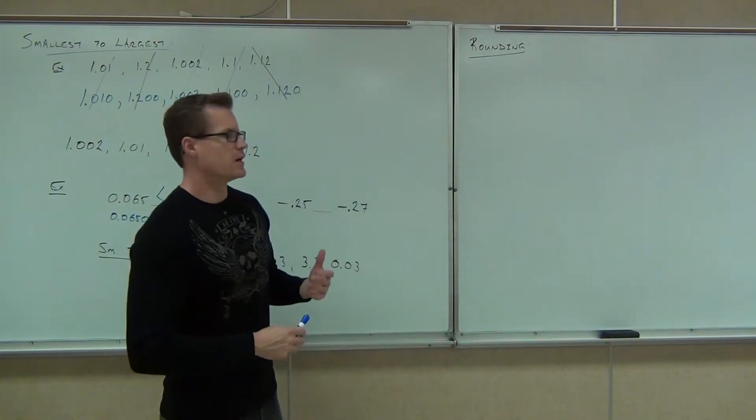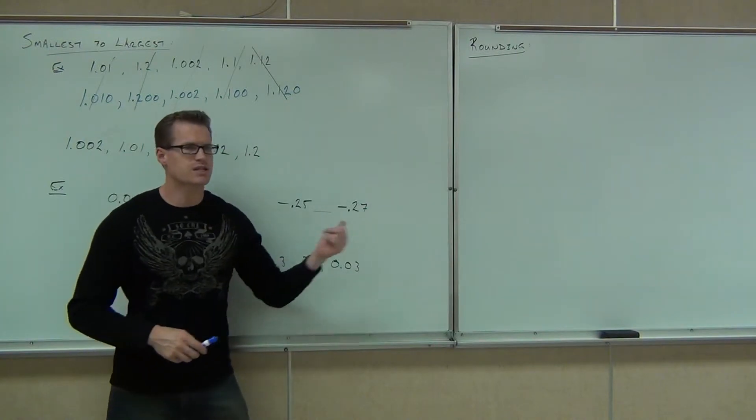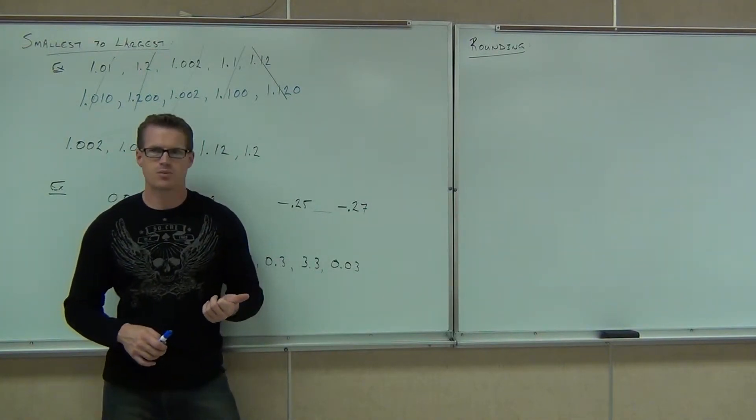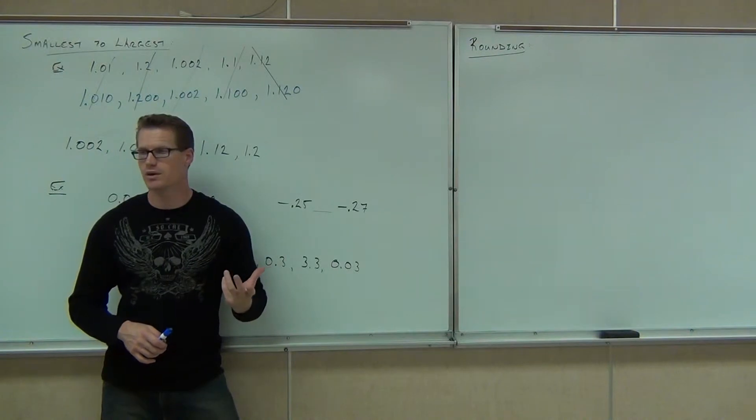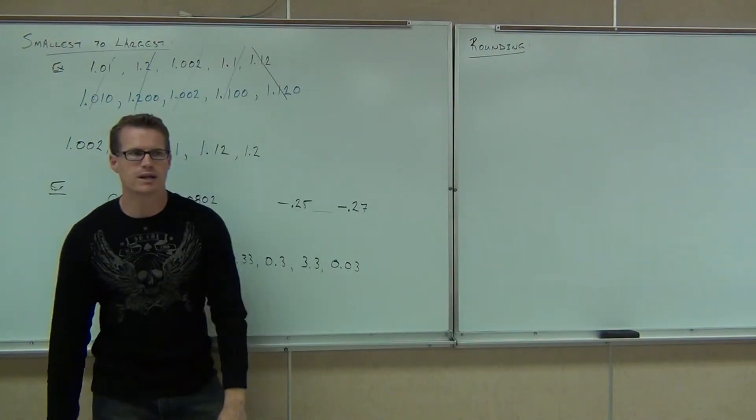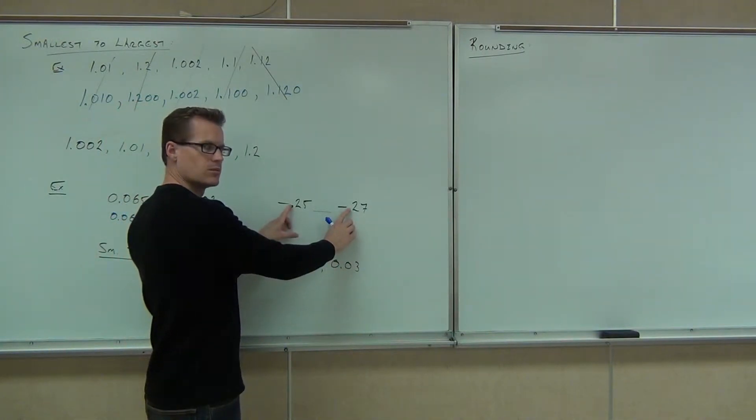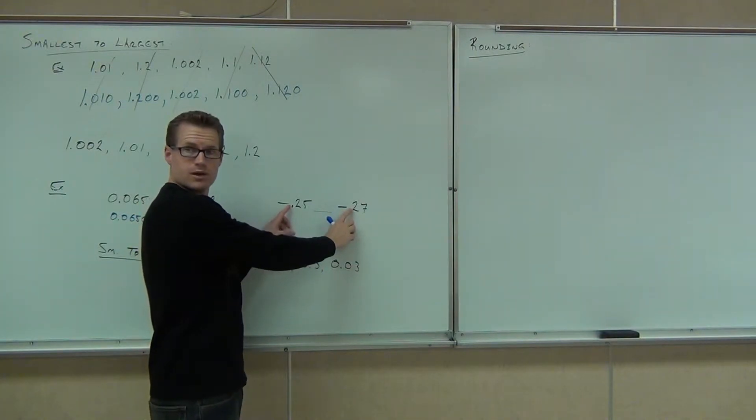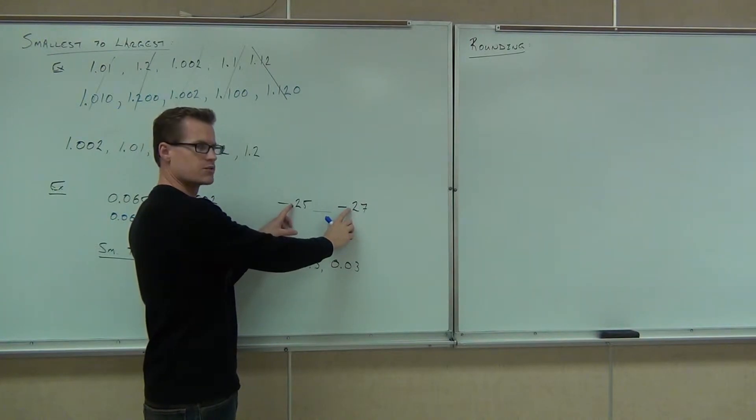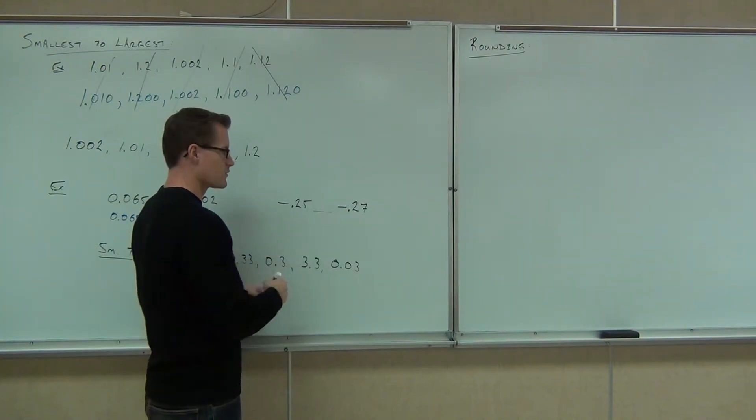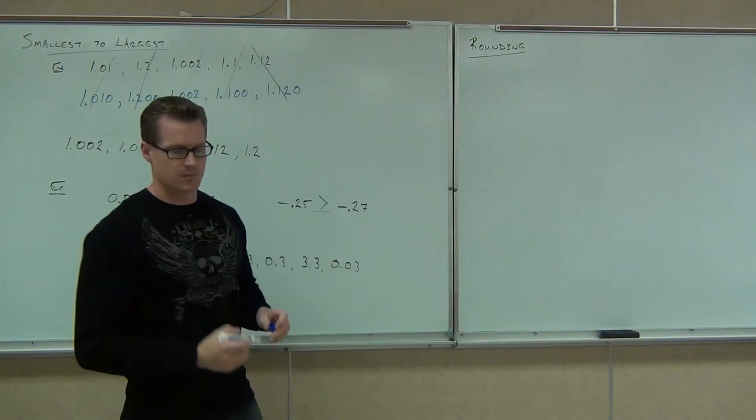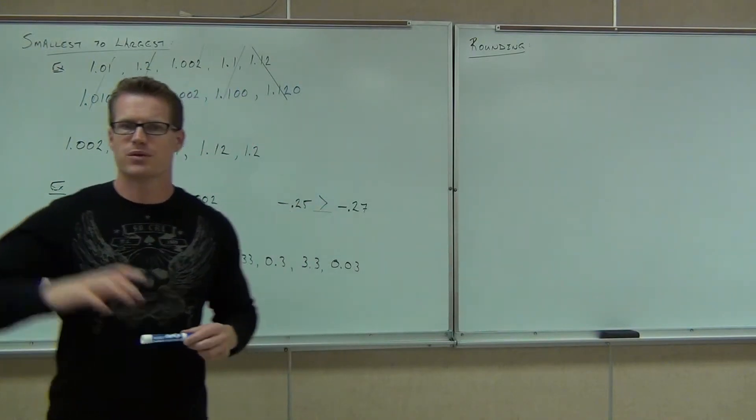Now as far as this one goes, these are the same length already. We've got negative 0.25 and negative 0.27. Since they're the same length already, you're going to pretend there's no decimal there at all. Which number's bigger? Negative 25 or negative 27? Negative 25. So negative 0.25 is bigger than negative 0.27.